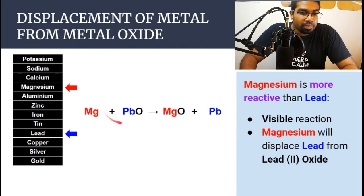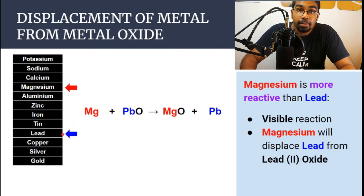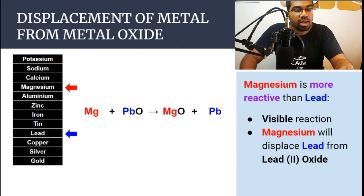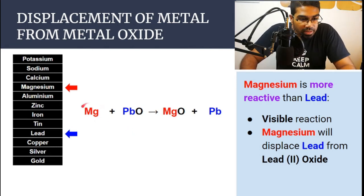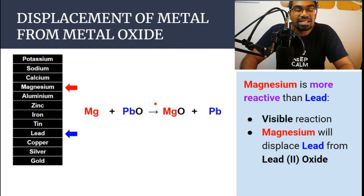Let's look at an example. We have magnesium and lead oxide — magnesium is metal X and lead oxide is the oxide of metal Y. Magnesium is higher than lead in the reactivity series, which means magnesium is more reactive than lead. Since magnesium is more reactive than lead, magnesium will be able to displace lead out from the lead oxide, so there will be a visible reaction — we can observe a flame or a glow. Magnesium kicks out lead from lead oxide, and the products are lead and magnesium oxide. This is a displacement reaction — when an element displaces another element from its compound.